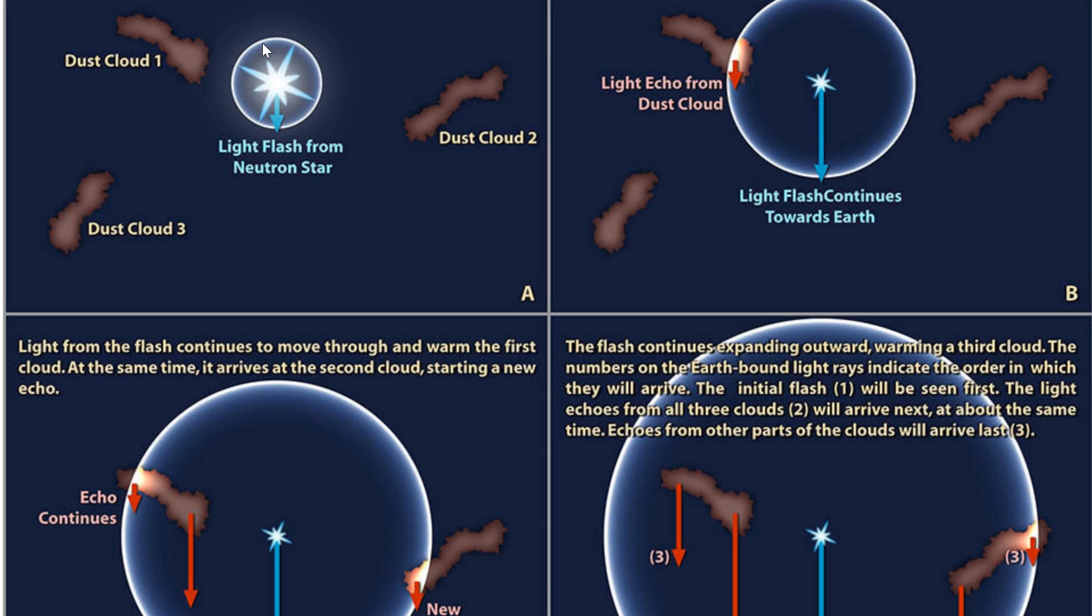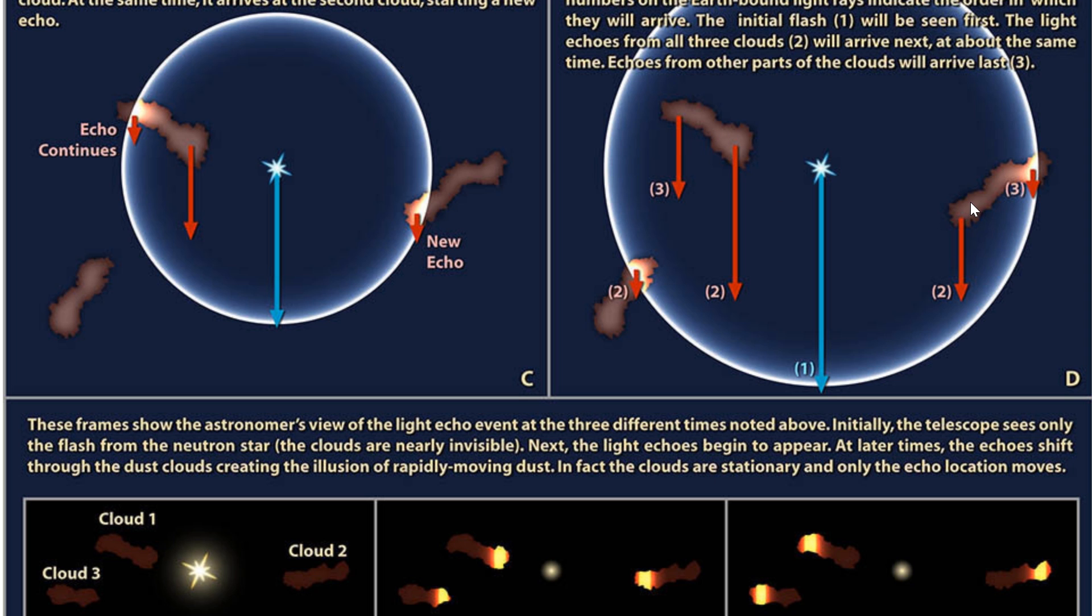So we have this light flash, we have several dust clouds. When the light flash hits the first cloud, this is where some of the light gets returned back to Earth. And as the other clouds get hit, some of this other light starts being returned as well.